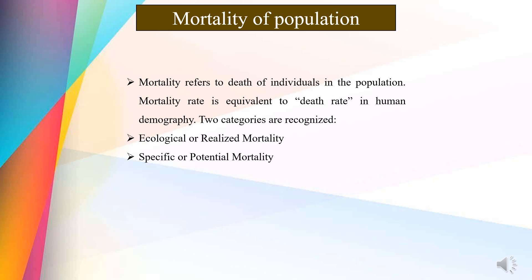Coming to the mortality of population — it refers to the death of individuals in the population. This rate is equivalent to death rate in human demographics. Two categories are recognized: ecological or realized mortality, which is the loss of individuals under a given environmental condition and is not a constant but varies with population and environmental conditions; and specific or potential mortality, which is the theoretical minimum mortality — a constant for a population — representing the loss under ideal or non-limiting conditions. Even under the best conditions, individuals would die of old age determined by their physiological longevity, which is often far greater than the average ecological longevity. Specific mortality is generally expressed as a percentage of the initial population dying within a given time or as a percent of the average population. Often it is the survival rate that is of greater interest than the death rate.